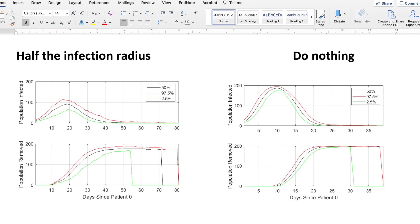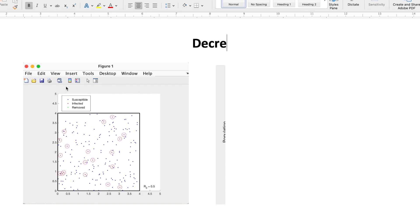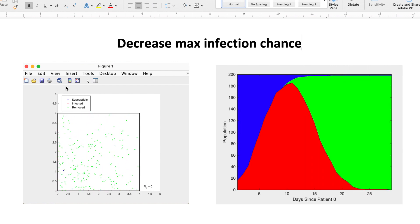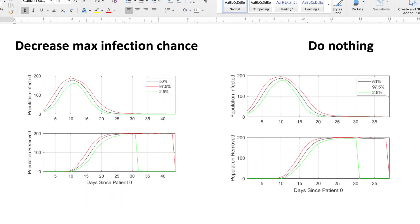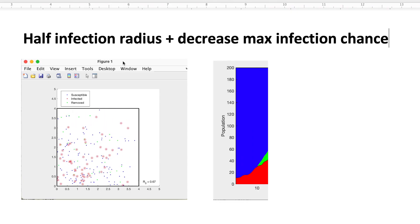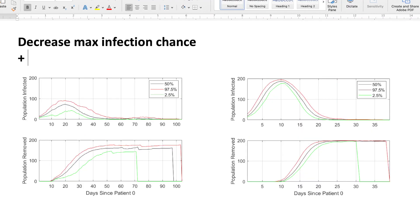Now, what if we instead decrease the probability of infection? This could be better hand washing or wearing face masks. We expected this to have a similar result as decreasing the infection radius. However, minimal difference was observed. We believe this was due to limitations in our code. Finally, by decreasing both values, we got the best results. As you can see, it spreads out this curve. This shows how changes to hygiene have a really big effect on the rate of spreading.